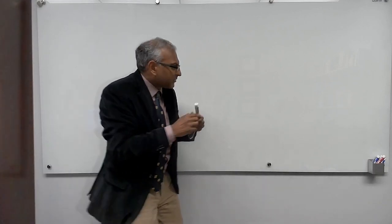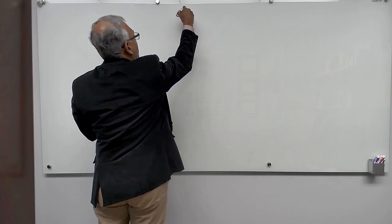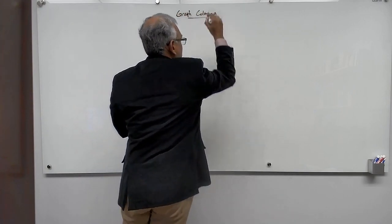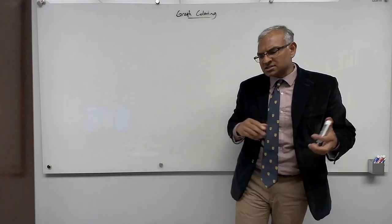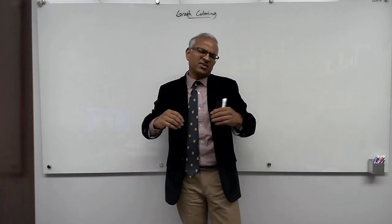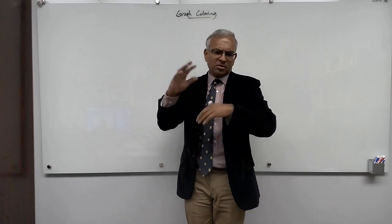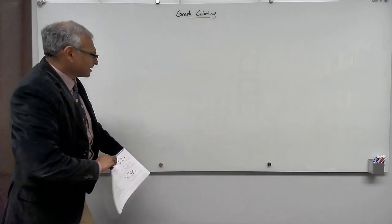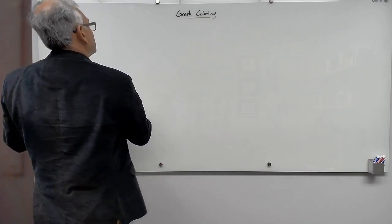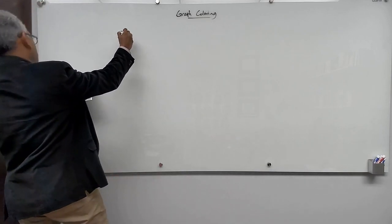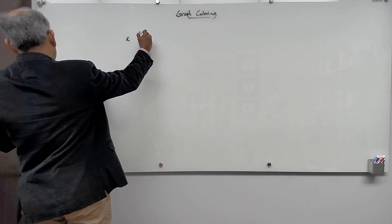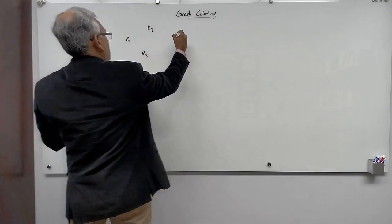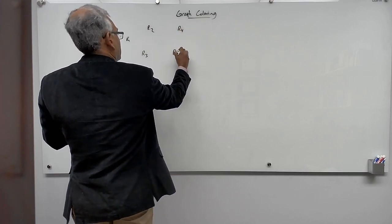Let's talk about graph coloring — it's a problem that even a three-year-old could understand. I'm going to present it in two very different contexts. Imagine you have a bunch of radio stations: r1, r2, r3, r4, r5, r6.